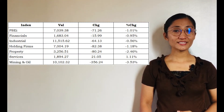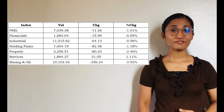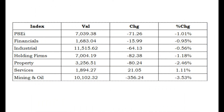Beside me is a simple list of index values. VAL, or V-A-L, is the index value. CHG is the change from the previous trading day's index value to the current trading day's index value — that is, today's value less yesterday's value. Percent CHG is the ratio of CHG to VAL, that is, CHG divided by VAL.